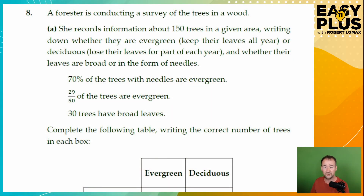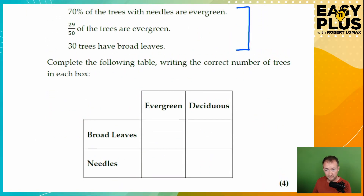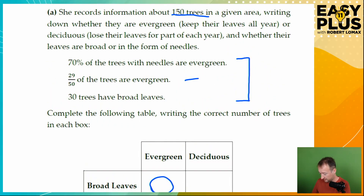There's a forester who's conducting a survey of the trees in a wood. She records information about 150 trees, noting whether they're evergreen or deciduous, and whether their leaves are broad or in the form of needles — because not every evergreen tree has needles. We've got various percentages, fractions, and numbers to help us find the answers, and we have a table to complete. For example, we need to find the number of evergreen trees with broad leaves, but nowhere are we directly told that value.